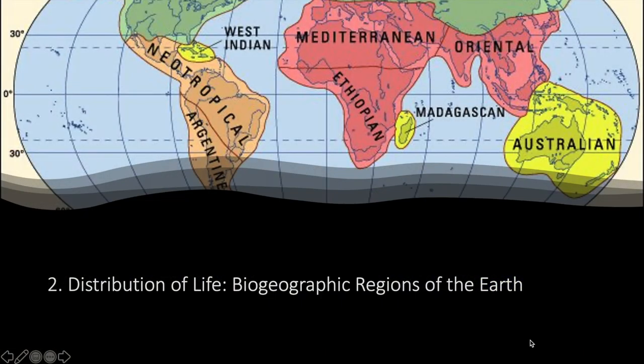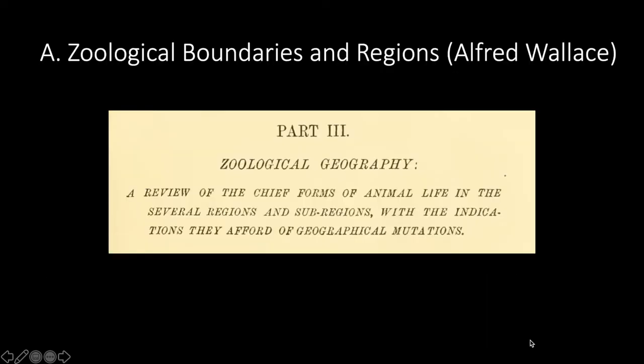Now that we're done with the different parameters that affect the distribution of life on earth, we'll move on to how the distribution of life on earth actually looks — the different biogeographic regions of the world in terms of organism distribution. But before we go to that, we'll first recognize the different efforts of naturalists back then to map or delineate these regions of the world with certain distinct species in them.